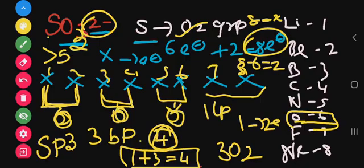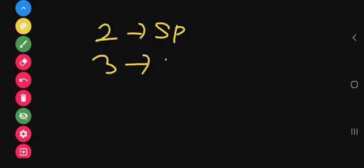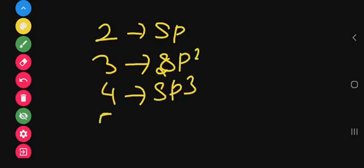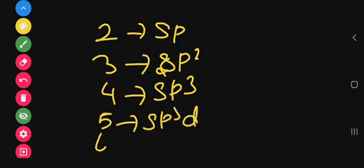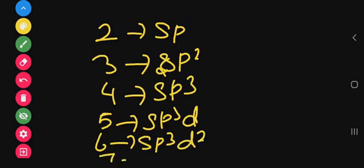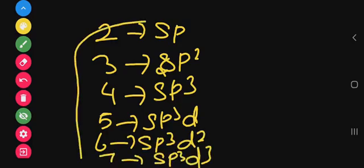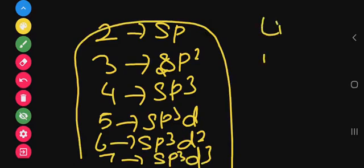The general rule is: 2 pairs → sp hybridization; 3 pairs → sp² hybridization; 4 pairs → sp³ hybridization; 5 pairs → sp³d hybridization; 6 pairs → sp³d² hybridization; 7 pairs → sp³d³ hybridization.